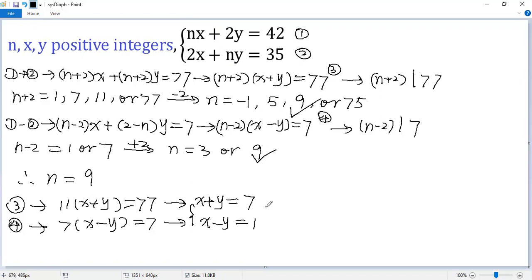Add them together. So we get 2x equals 8. So x equals 4. Subtract them. So we get 2y equals 6. So we get y equals 3.